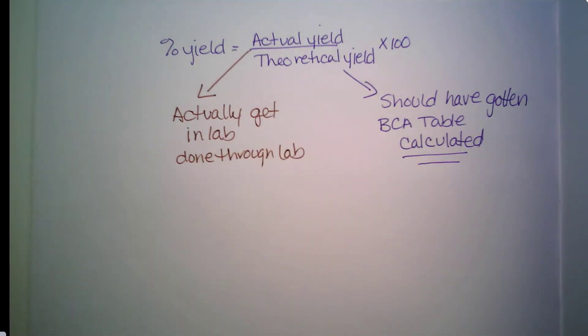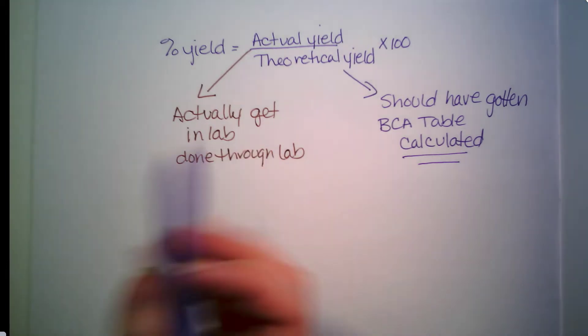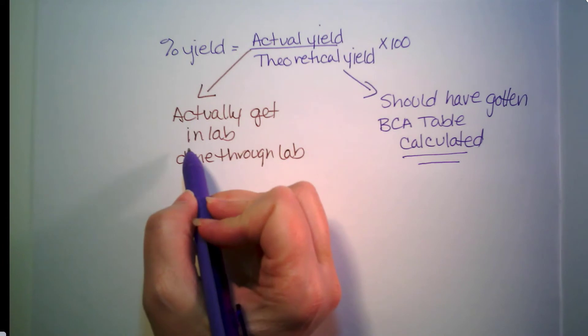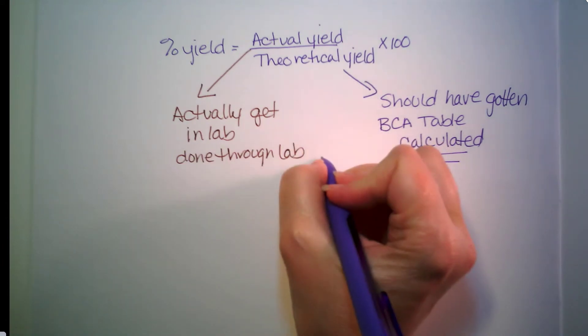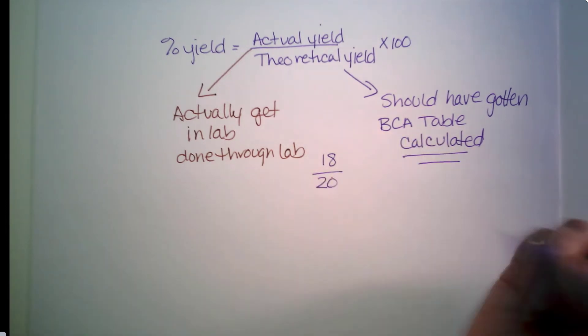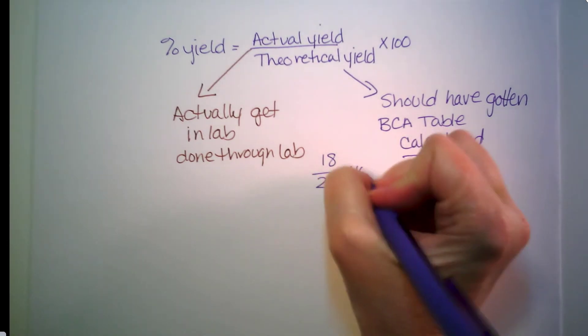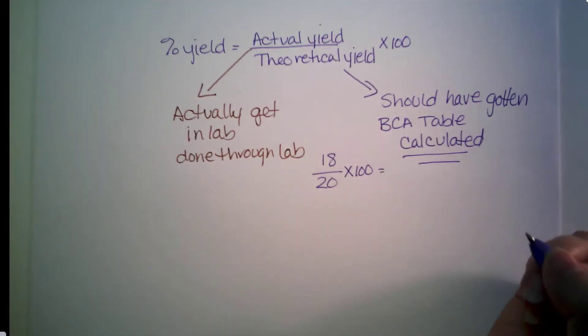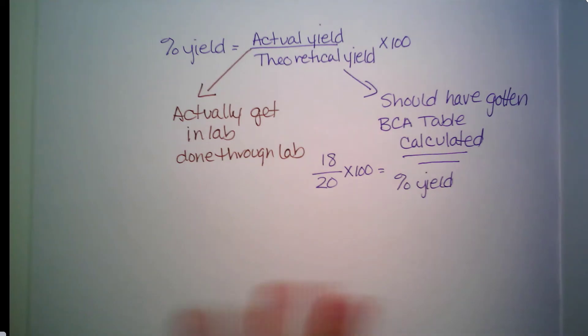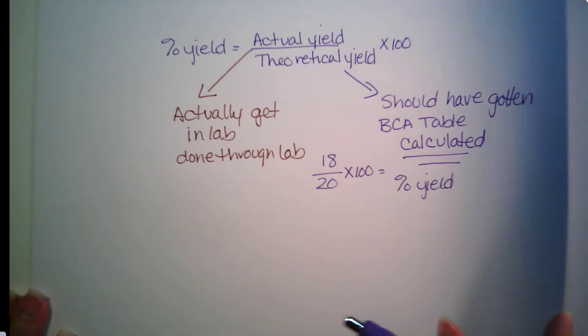If we're talking about those s'mores, instead of getting the 20 that we should have gotten, we got 18. So what we would do is we would take those 18 s'mores divided by the 20 s'mores times 100. And that would give me my percent yield. Hopefully that kind of makes a little bit of sense.